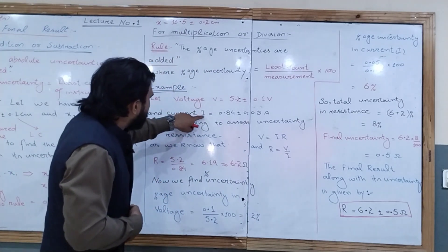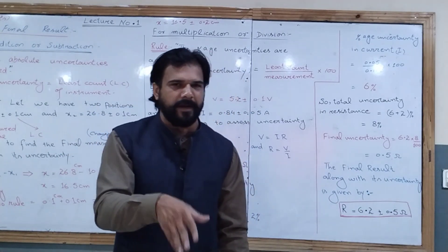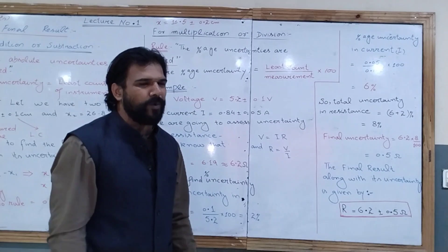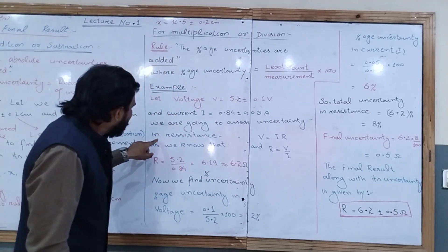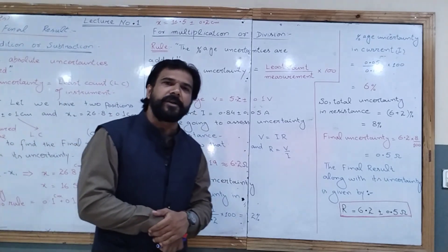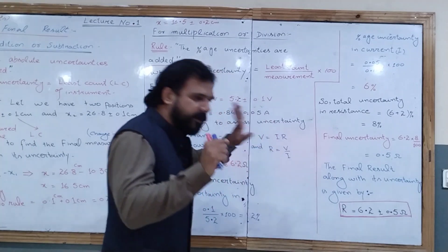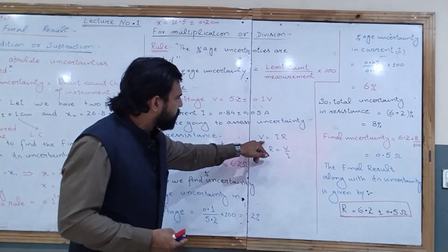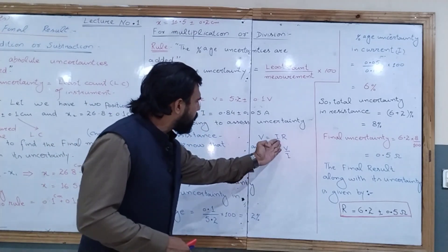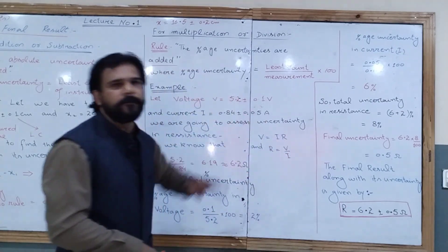The current value is I = 0.8 ± 0.05 A, where 0.05 A is the least count of the ammeter. We are going to assess the uncertainty in resistance. According to Ohm's law, V = IR, so R = V / I.